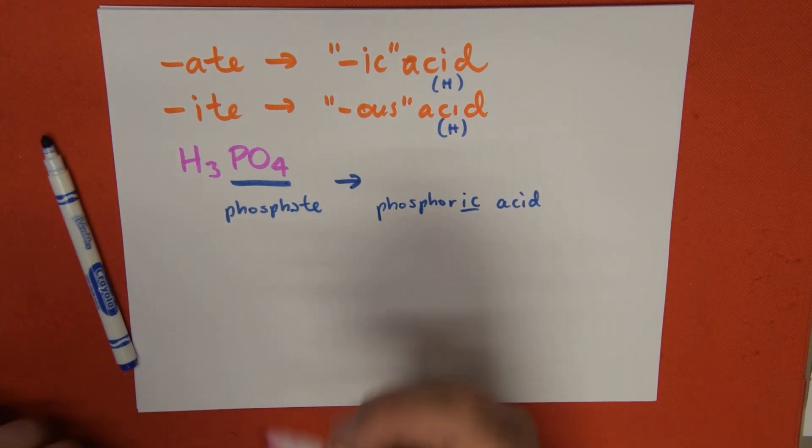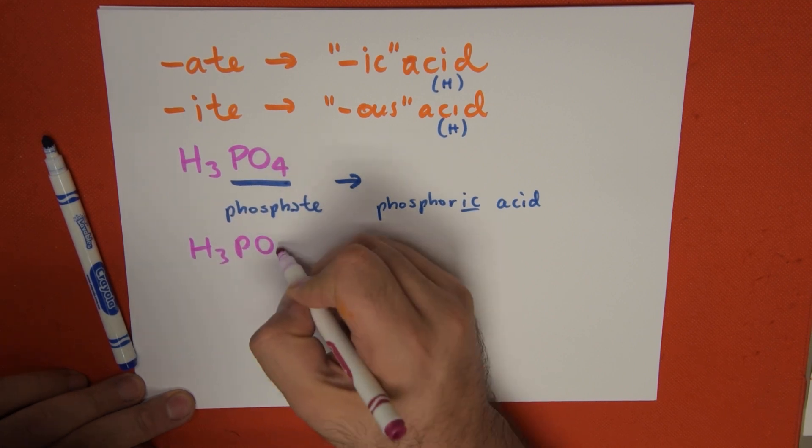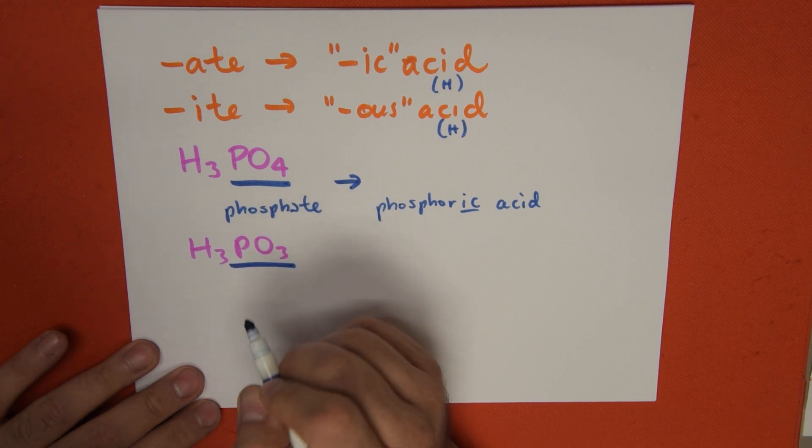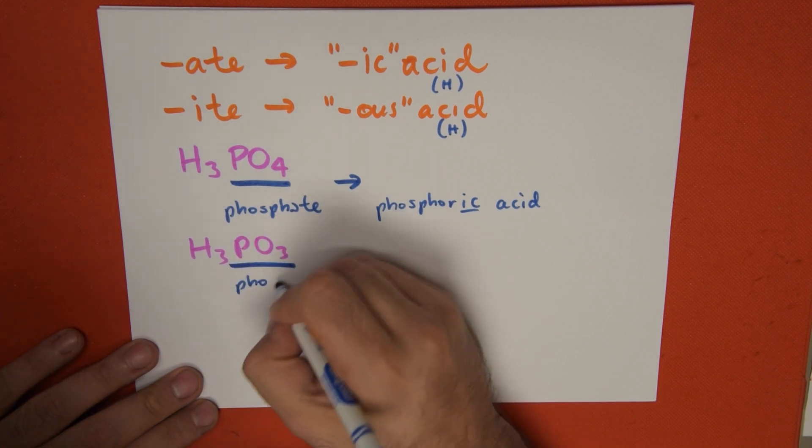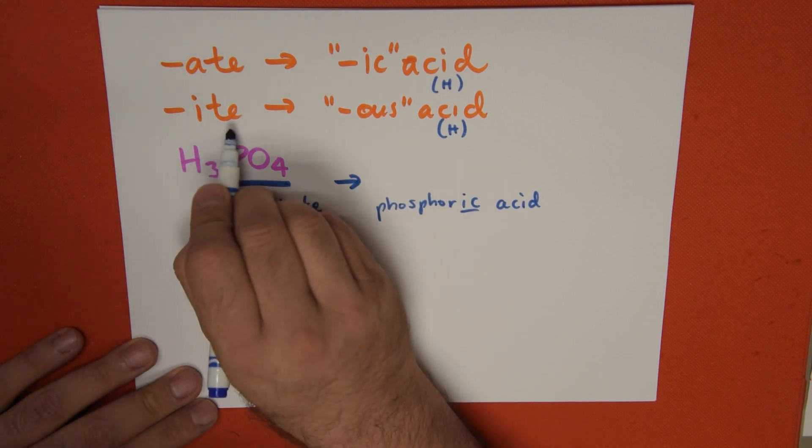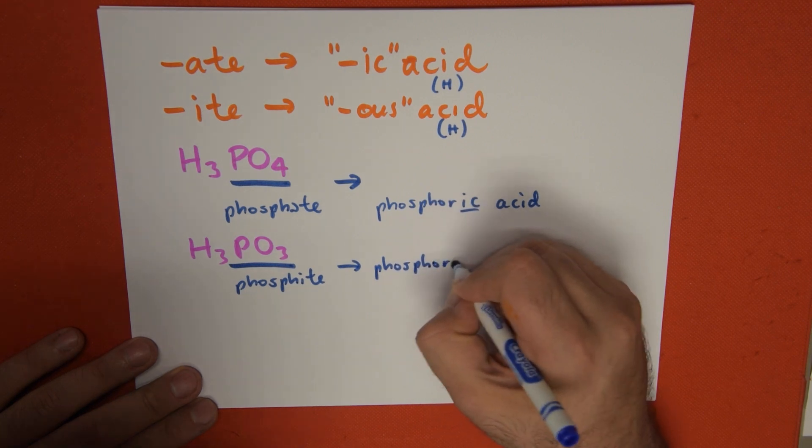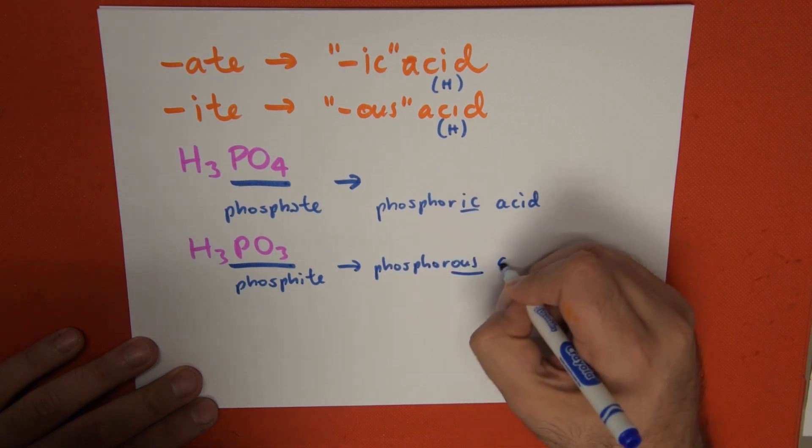Let's try that same example with another anion, which is PO3. We analyze the name of the anion, and we find it on our table. This is phosphite. Since it's an -ite ending, we change the ending to -ous. This is going to be phosphorous acid.